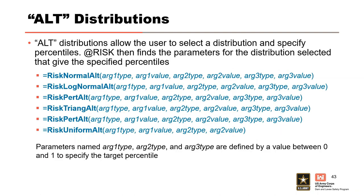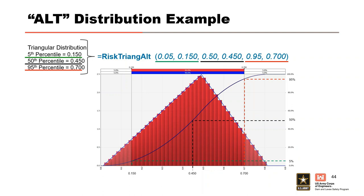AtRisk can also be used to find parameters for a selected distribution that result in specified percentile values. This is useful when fitting distributions to stage frequency relationships, because RFA does not give a CDF for each stage — just percentiles of the entire curve. The syntax specifies the percentile as a decimal, then argument types and their corresponding target percentile values. For example, to define a triangular distribution with a 5th percentile of 0.15, a 50th percentile of 0.45, and a 95th percentile of 0.7, the formula is entered as shown, and the resulting CDF confirms everything works as intended.